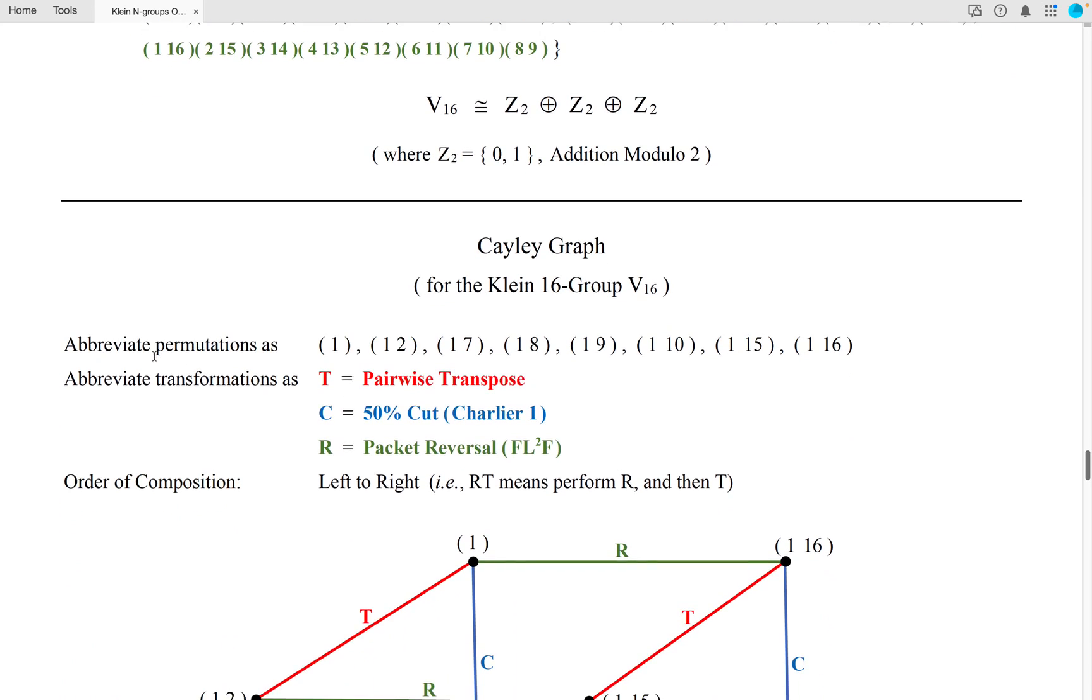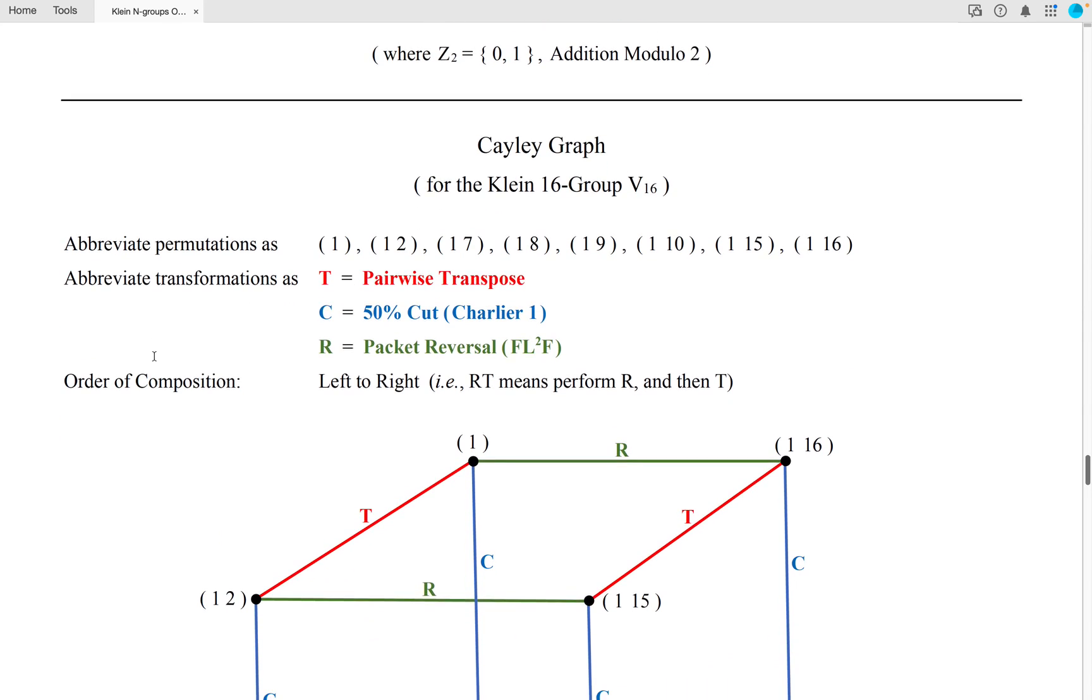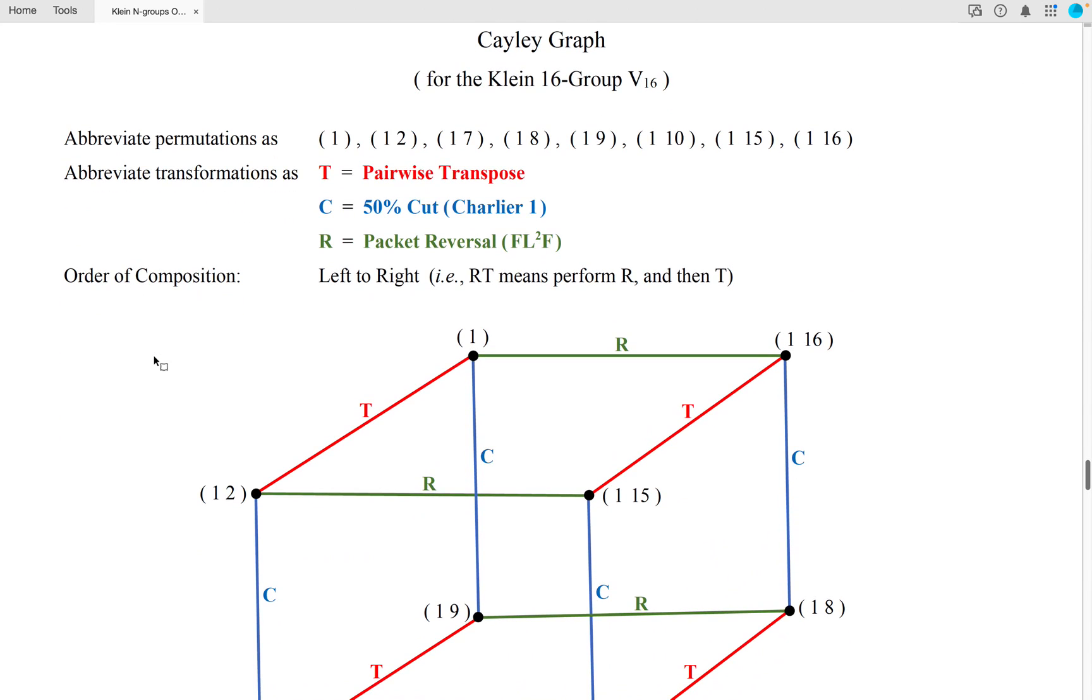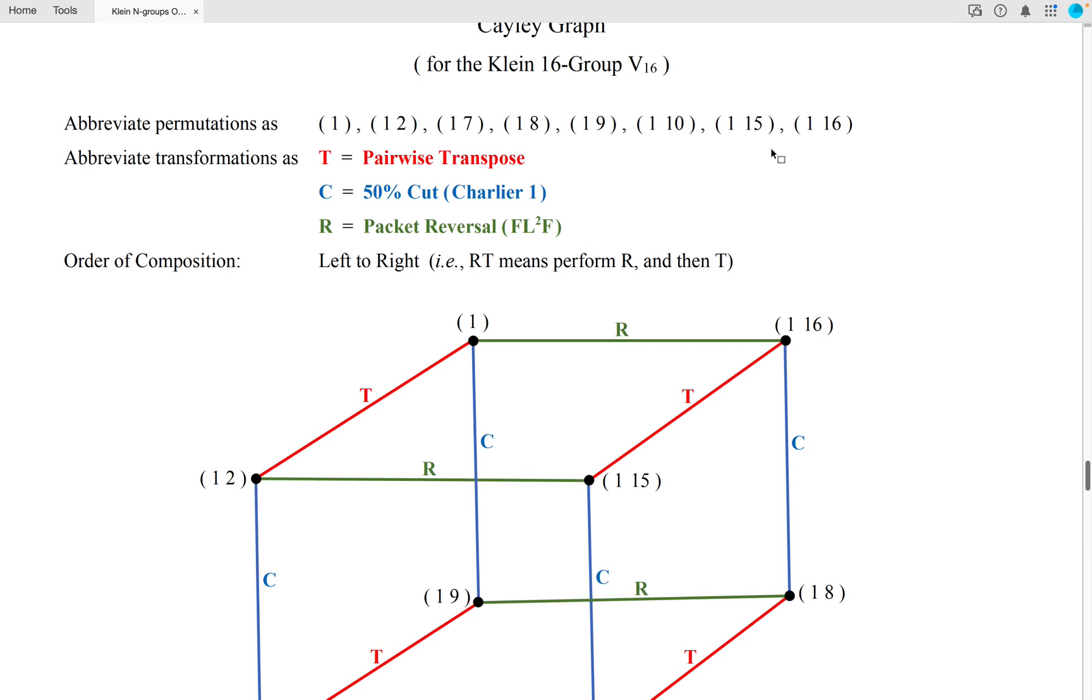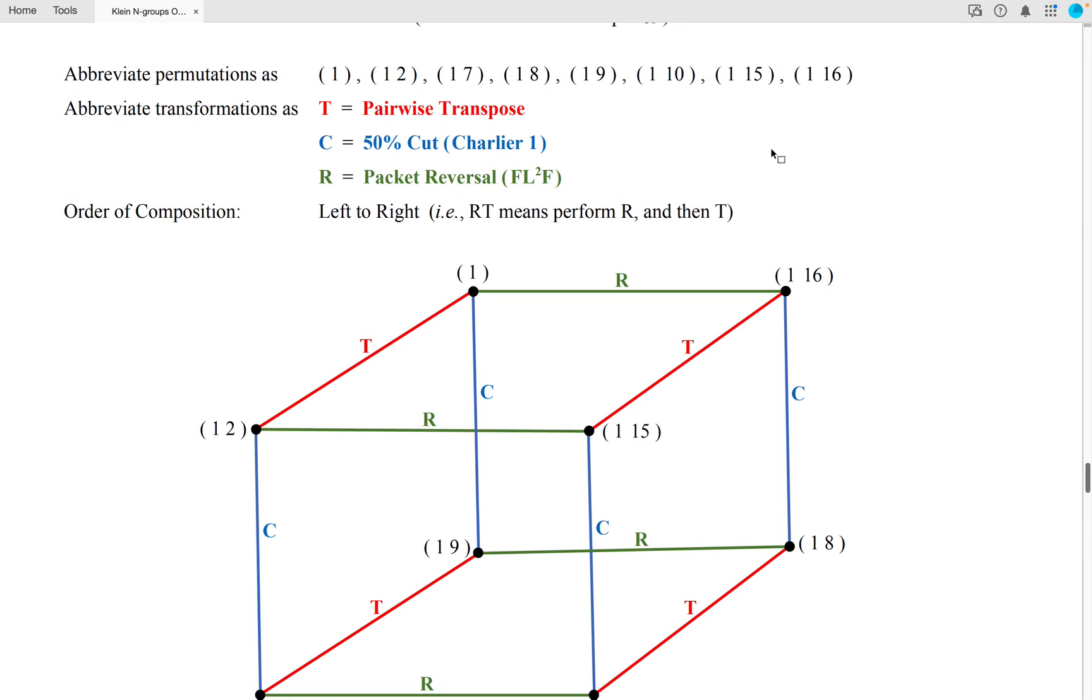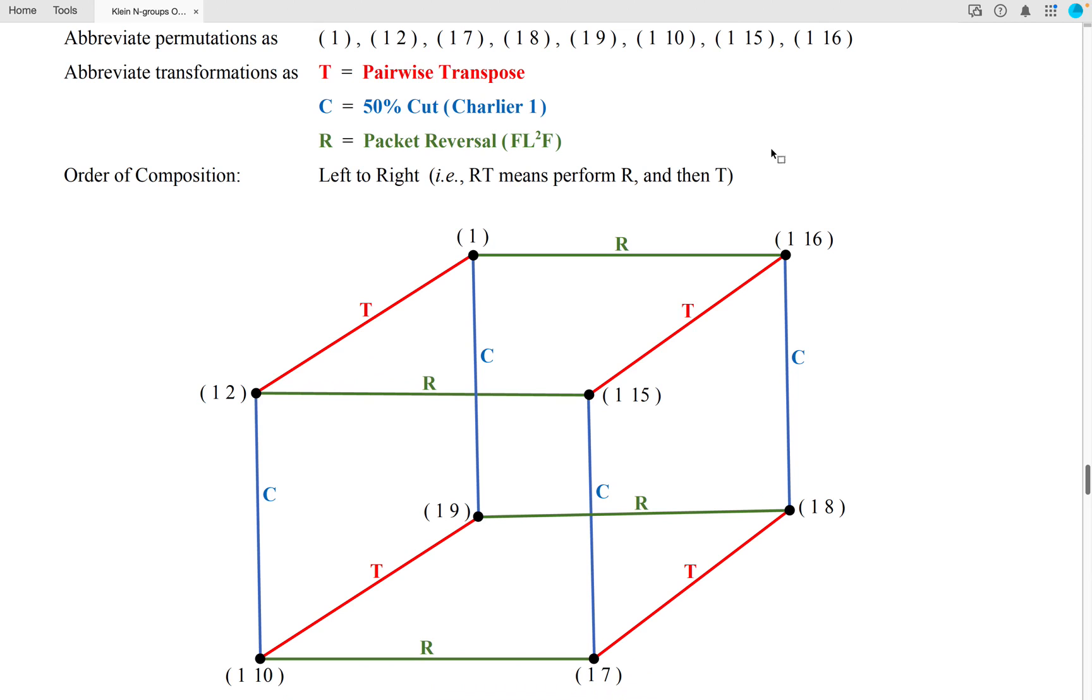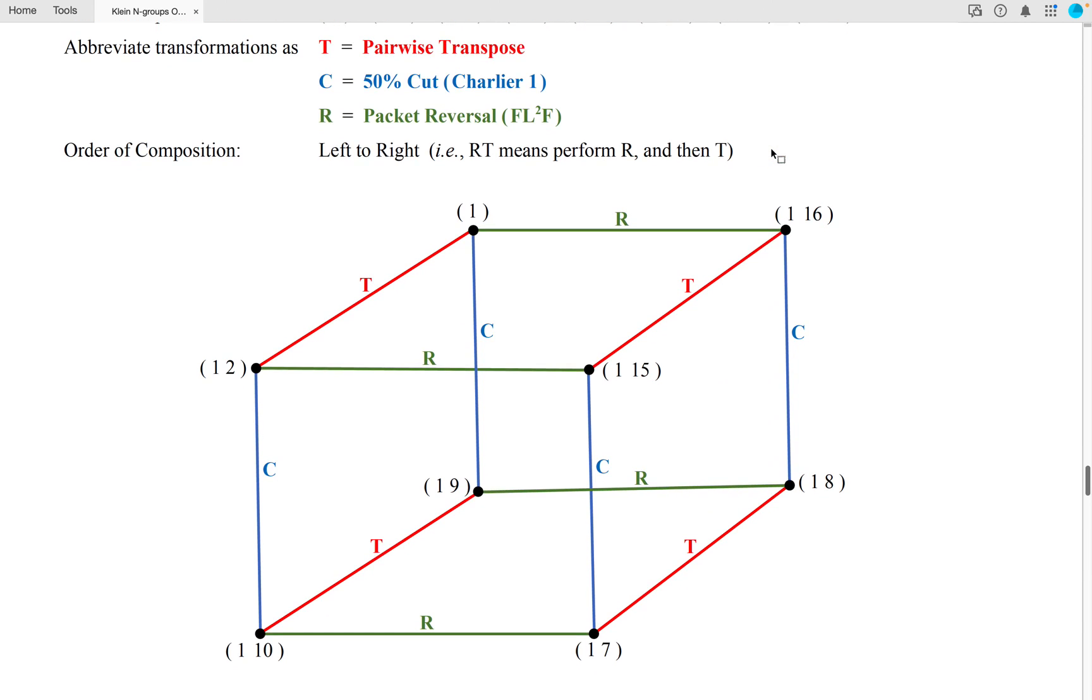And the Cayley graph for the Klein 16 group is as follows, where we've abbreviated the 8 permutations by just taking the first 2 cycle within their representation and abbreviated the pairwise transpose by the letter T, the 50% cut by the letter C, and the packet reversal by the letter R.